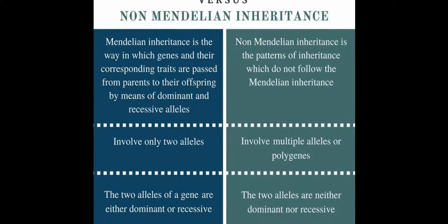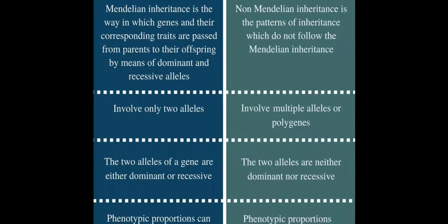Both dominant and recessive are involved in Mendelian inheritance, but in non-Mendelian inheritance it involves multiple alleles or polygenes. Multiple alleles or polygenes means the genes do not have just two alleles; they can have more than two — three, four, five or more. Therefore we call these polygenes.